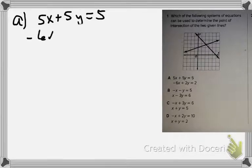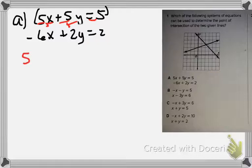I'm going to divide everything by 5, so I can kind of see if it resembles anything. If I divide the top part by 5, I'm going to get x + y = 1. Then the other one would be -6x + 2y = 2.